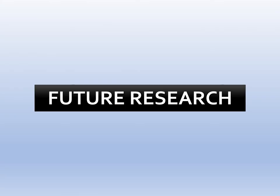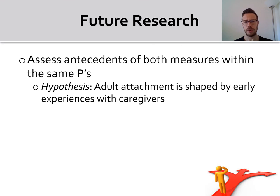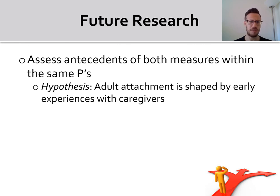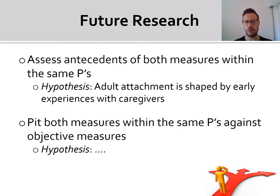So what can we do in future research in order to better understand and perhaps even solve the conundrum? First, we would like to assess the antecedents of both measures within the same participants. The theory is that adult attachment is shaped by early experiences with caregivers, and thus we would want to be able to say that both, or at least one of these measures, follow the theory. Currently, we know that the AAI has early caregiving antecedents, but we don't know much about the early experiences that shape self-report attachment assessment later in life. Moreover, we would like to pit both measures within the same participants against objective measures. However, we need a priori hypotheses to launch into such an endeavor — so we need a theory.